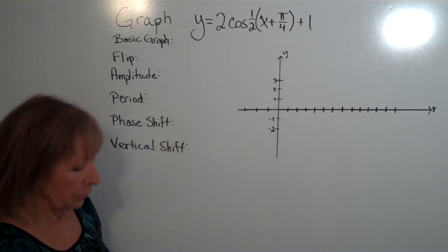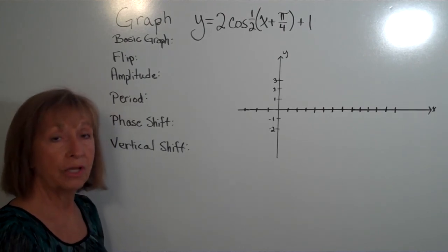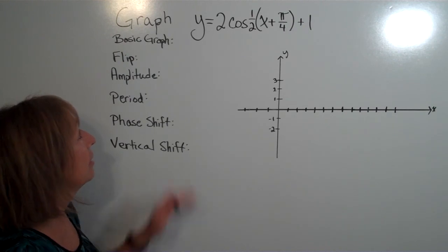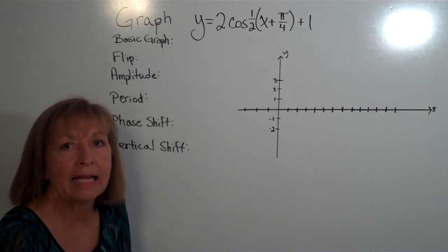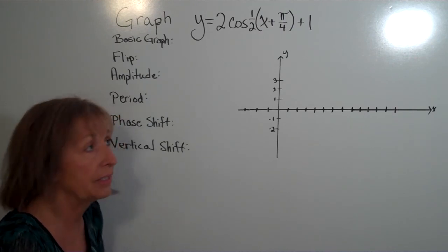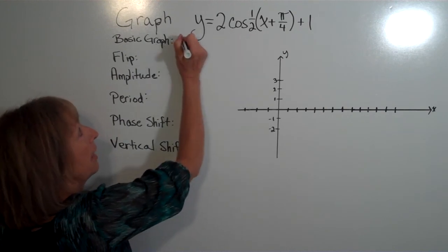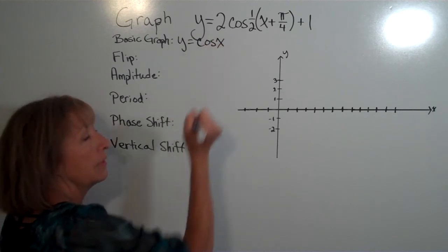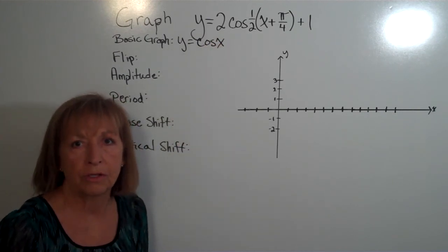Now we'll fill out some background information about our graph before creating it. The basic graph is the function representing the basic shape that we'll apply stretches and shifts to. Our basic shape here is cosine acting on our angle, so we want to start with the cosine function.